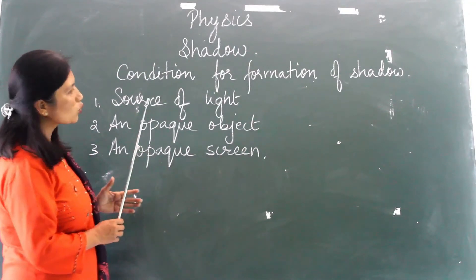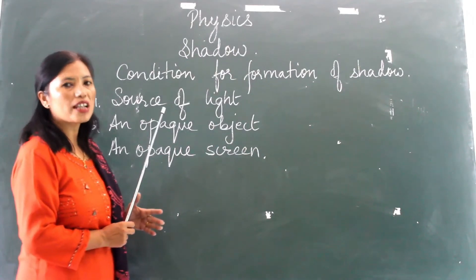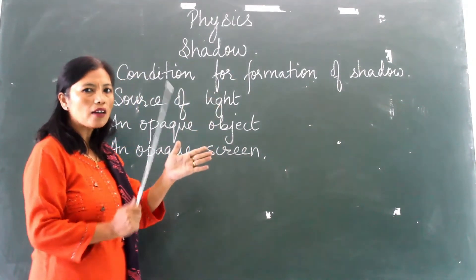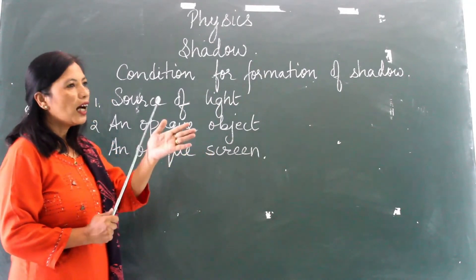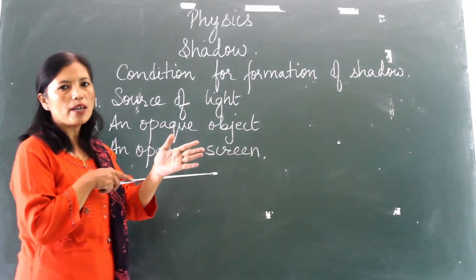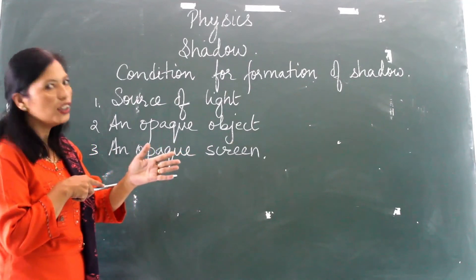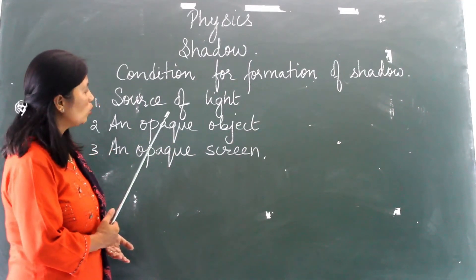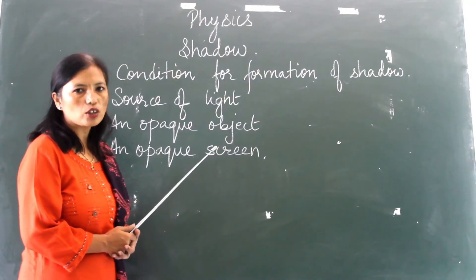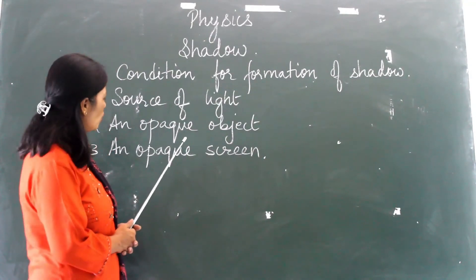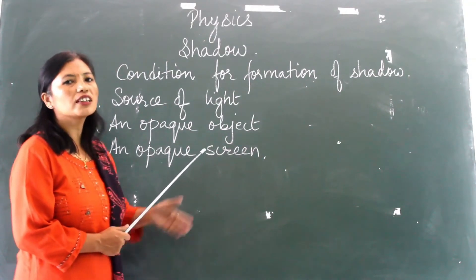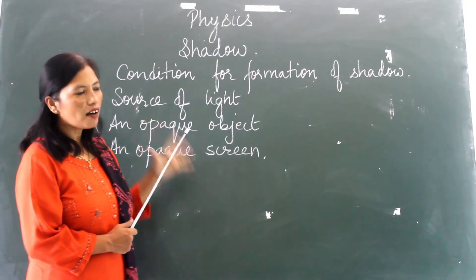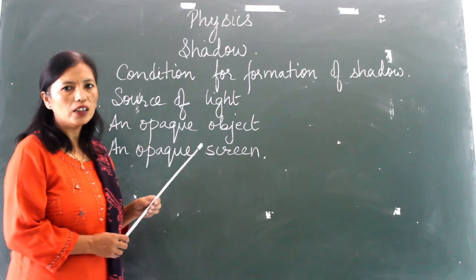Light from a source gives out some rays. Whenever we keep an opaque object in the path of that light, a dark area is formed behind which is known as a shadow. If you do not have a source of light, there will be no shadow. If you do not have an opaque object also, there will be no shadow. And if you do not have a screen where you can capture the dark area, you will not have a shadow.